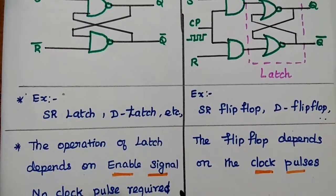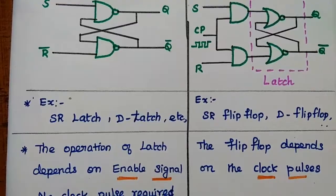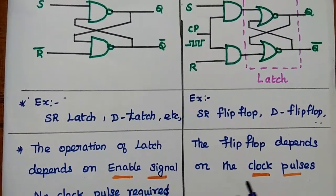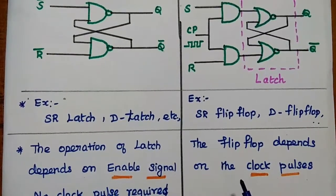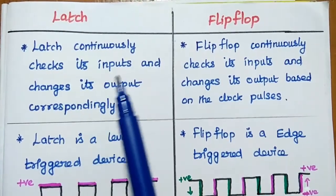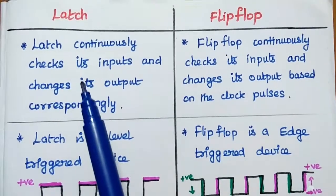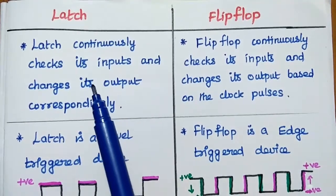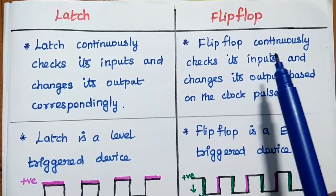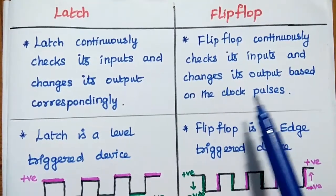The operation of latch depends on the enable signal — there are no clock pulses required. But in flip-flop, it entirely depends on the clock pulses. Latch continuously checks its inputs and changes its output immediately if there is any change in input. But in flip-flop, it continuously checks its inputs and changes its output based on the clock pulses.